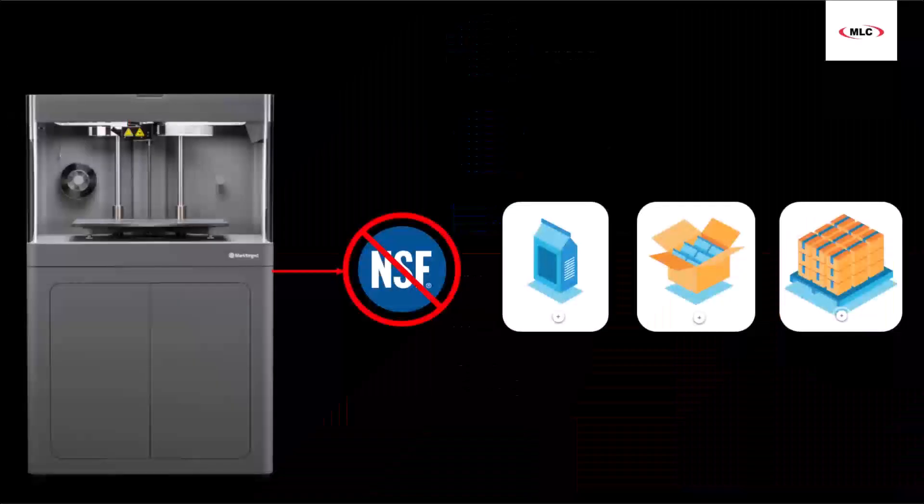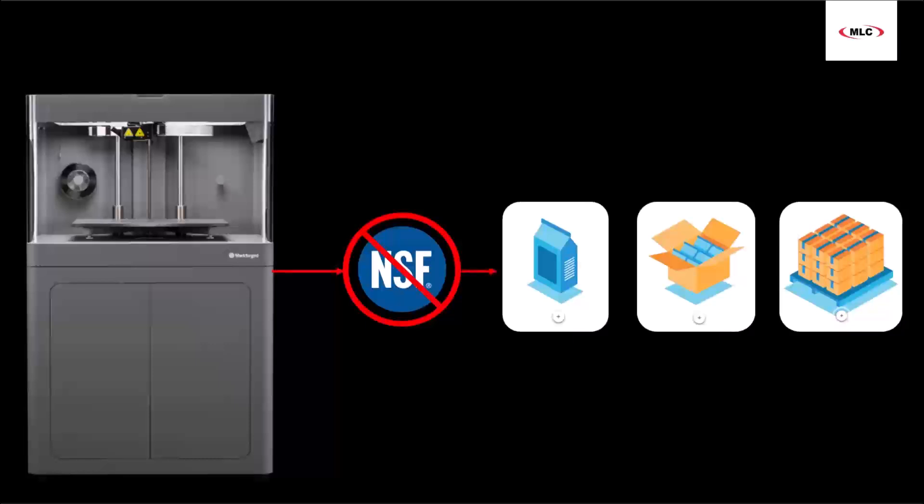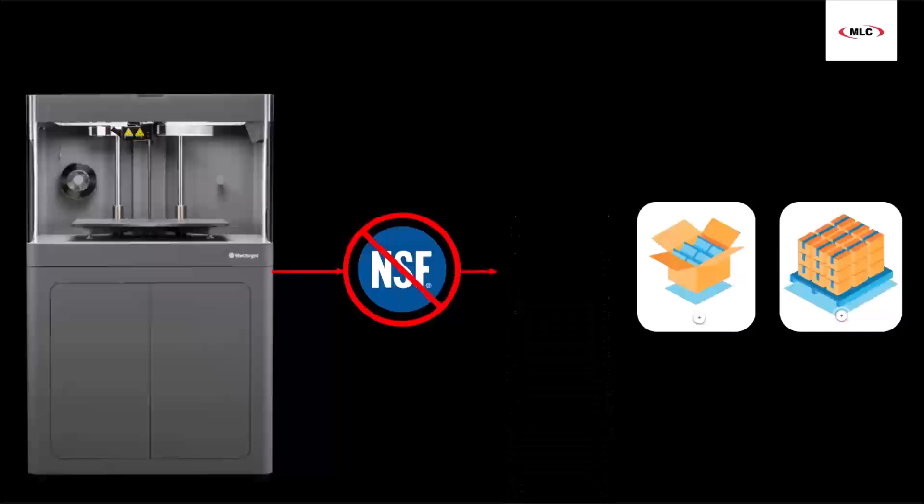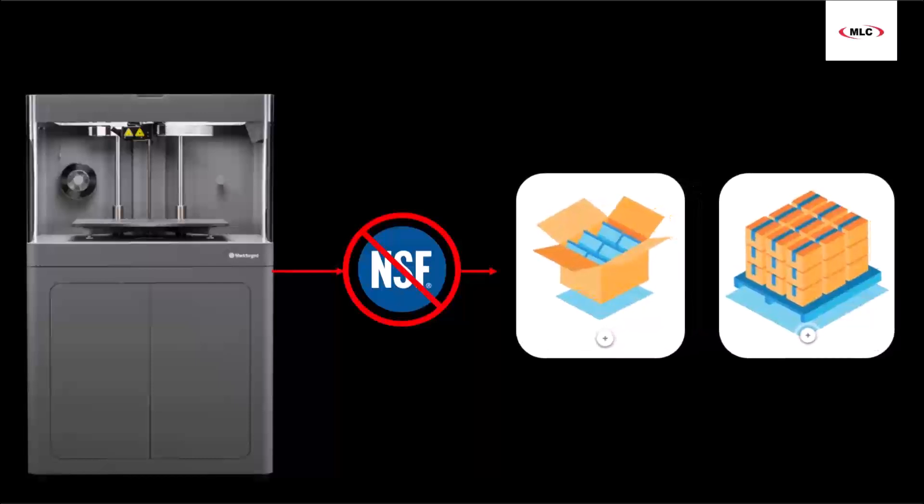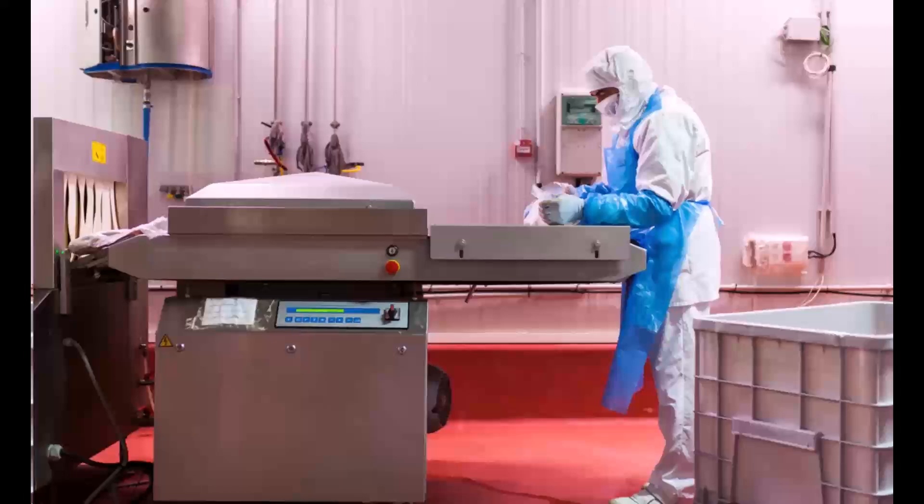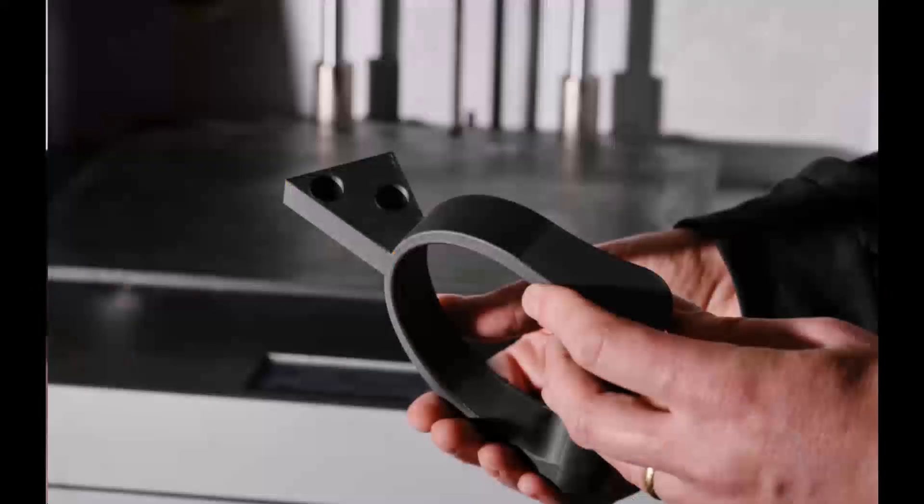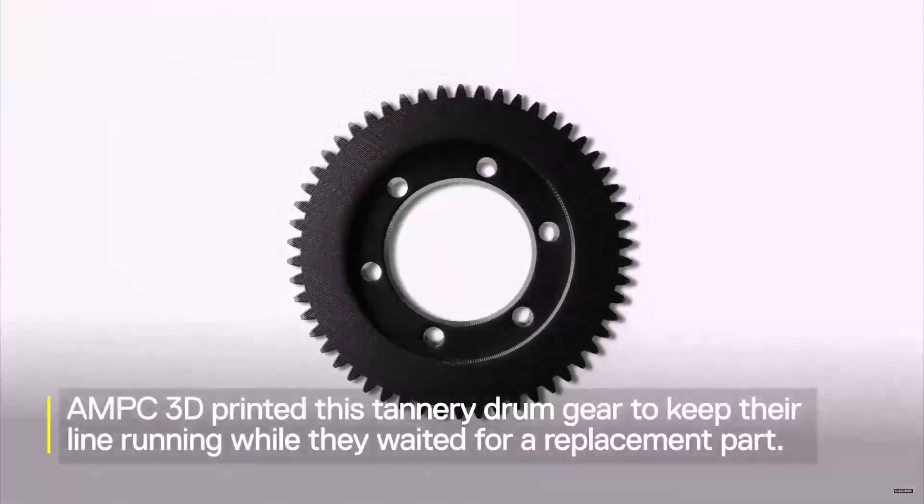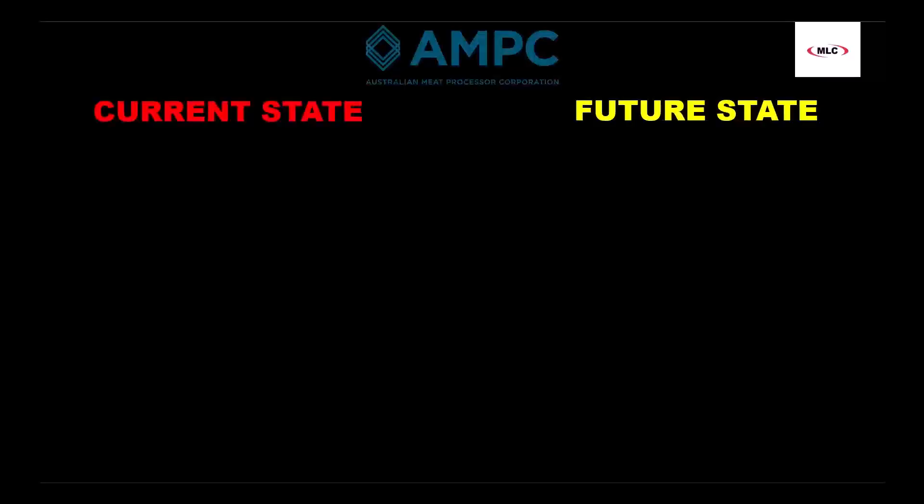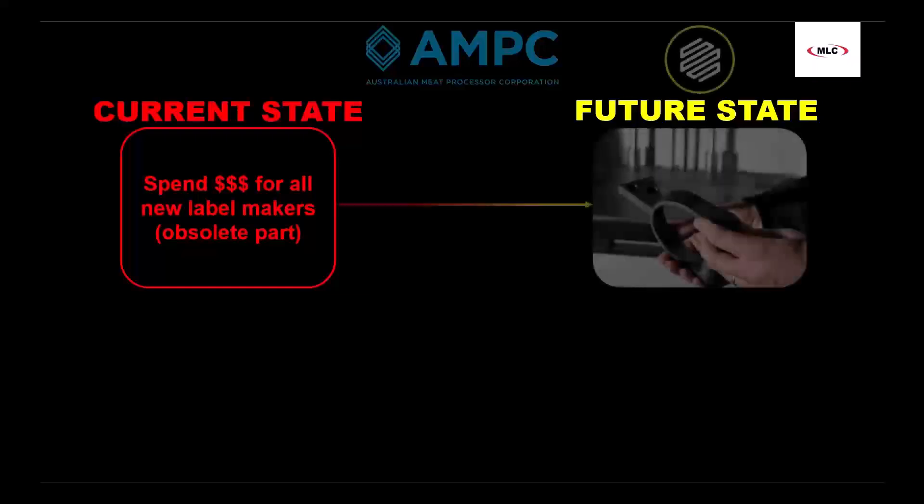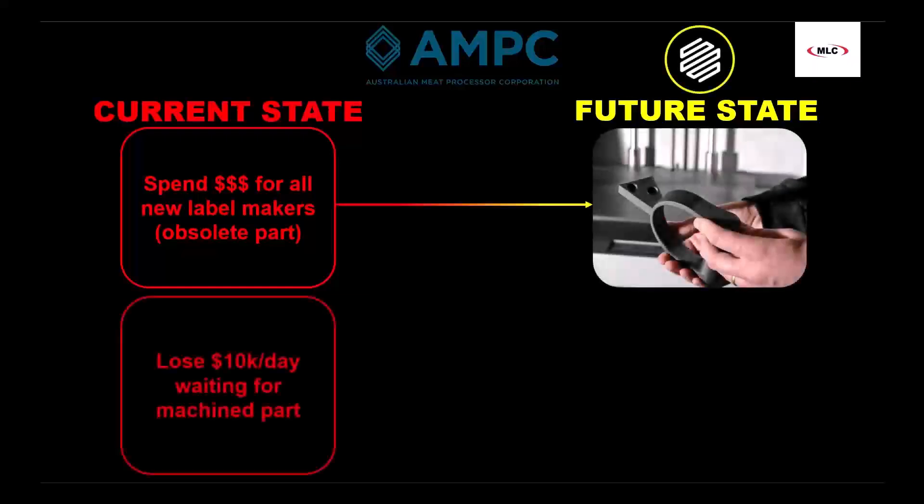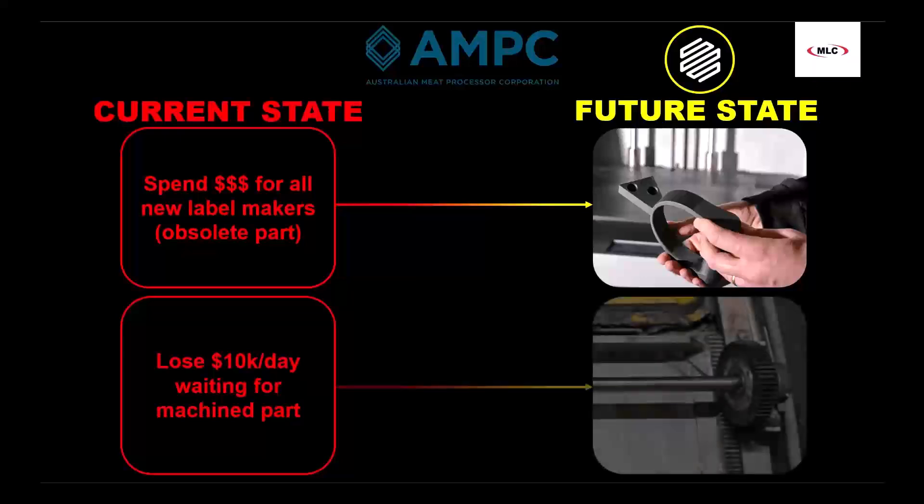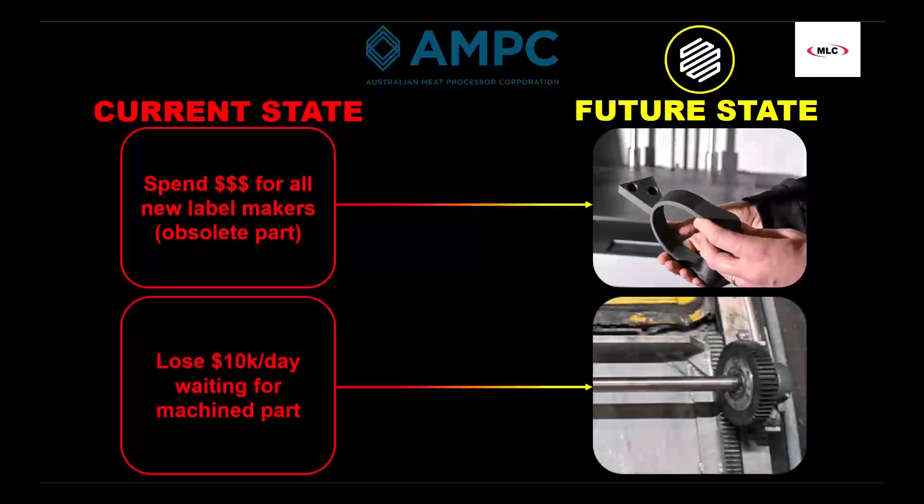For the longest time, 3D printed parts in the food and beverage industry were isolated to secondary and tertiary packaging, since this is about as far away from the food as you can get. Despite the lack of food safe materials, customers were still able to take full advantage of 3D printing's power. The Australian Meat Processing Corporation uses 3D printing to produce hinges for label makers and gears for their leather tannery drum. Without 3D printing, they would have had to buy all new label makers, since those hinges are no longer in production, or they would have lost $10,000 a day waiting for a machine gear instead of just running with a fiber reinforced 3D printed gear while they wait for the machine part.